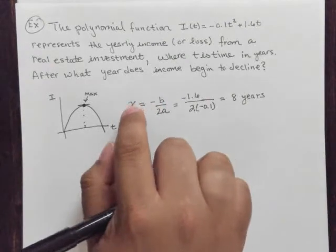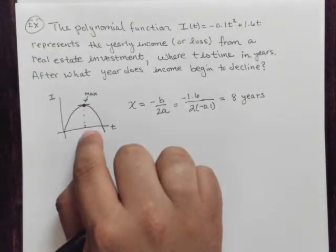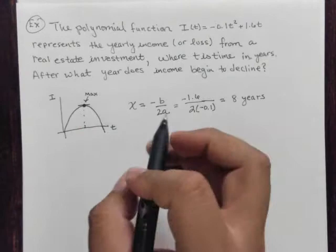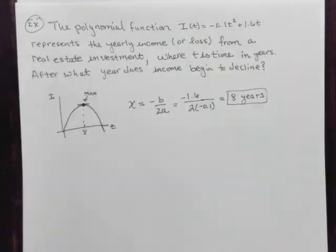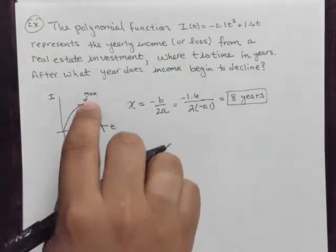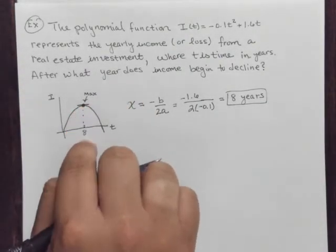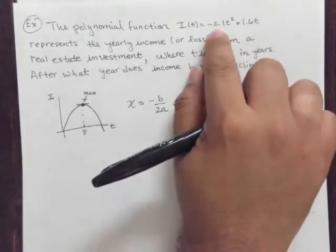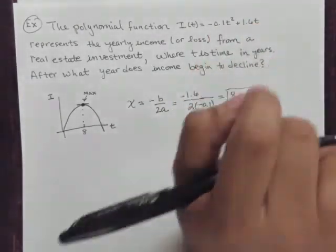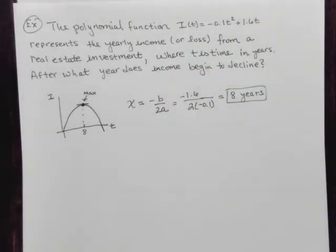After 8 years, the income begins to decline, so this is year 8. The answer is 8 years. Now, if we wanted to figure out how much income they're going to get in year 8 — what is the maximum amount of income from this real estate investment — then all we would have to do is plug in 8 into the income function and obtain our answer. This is a really great and easy application for minimums and maximums of quadratic functions.